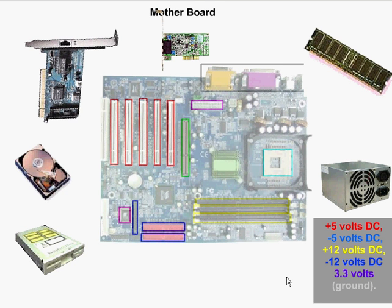In this diagram, we've got all the main components of your computer system, and we've taken them apart so we can look at them separately and individually. We've got the motherboard in the center, outlined by its main components. On the left, we've got a removed floppy drive, a removed hard drive, a removed network card, a modem, a memory stick, and a power supply.